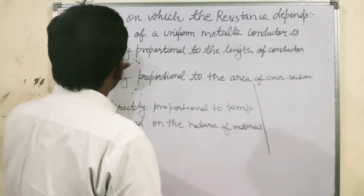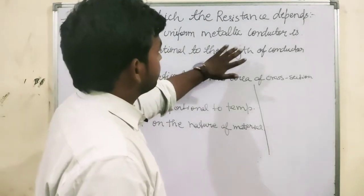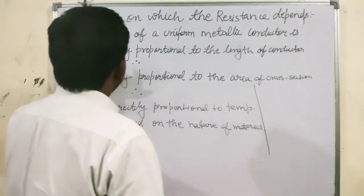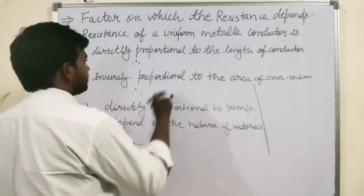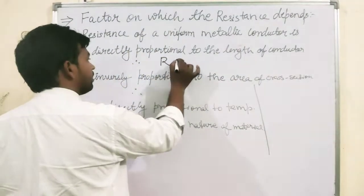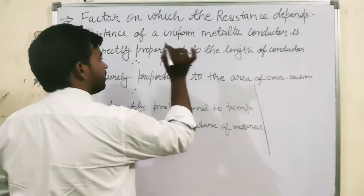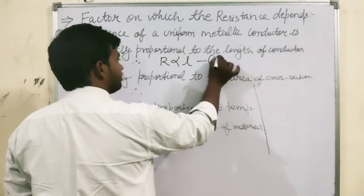For a uniform metallic conductor, resistance is directly proportional to the length of conductor, that is R directly proportional to L. That is our first equation, clear?